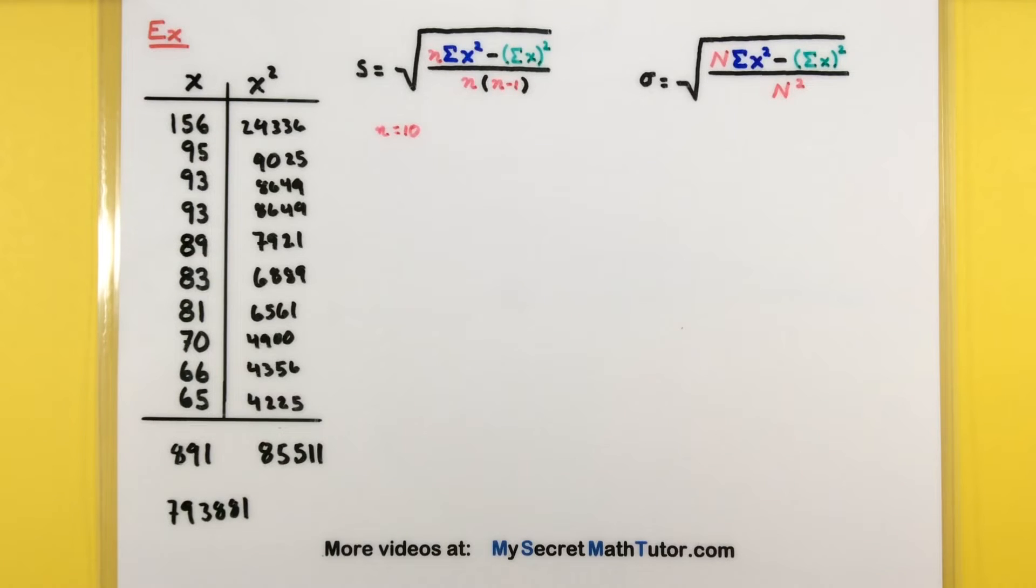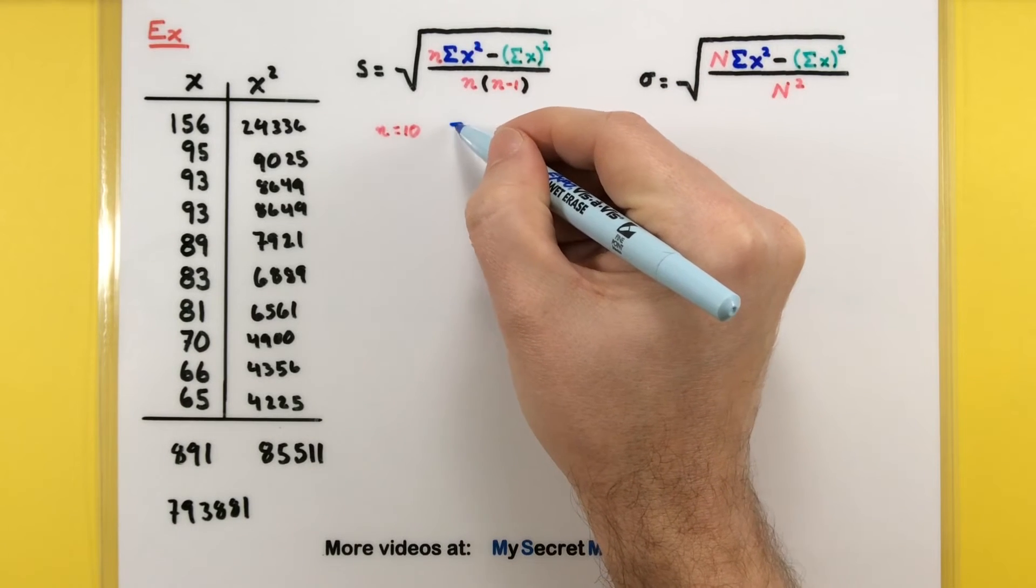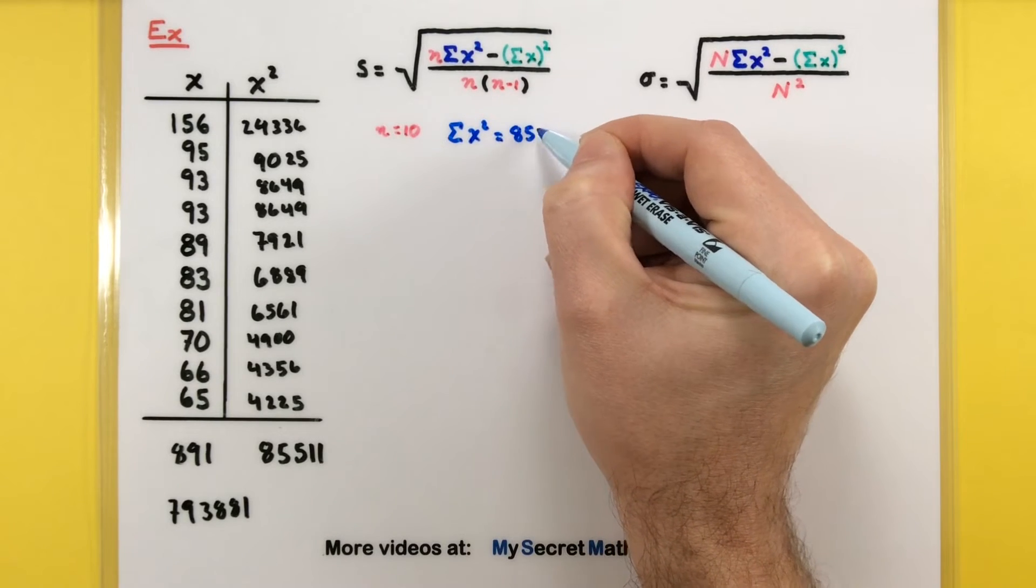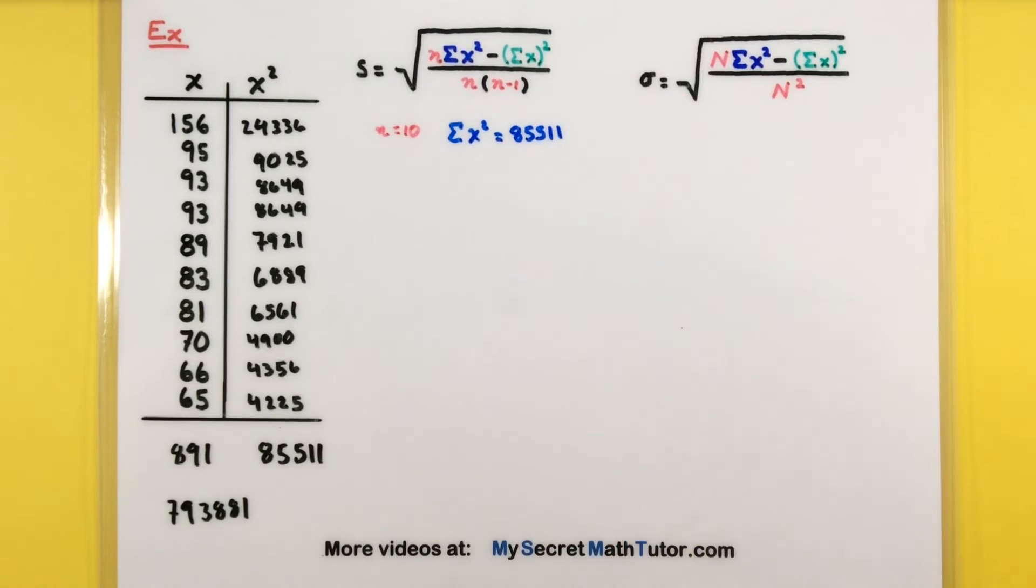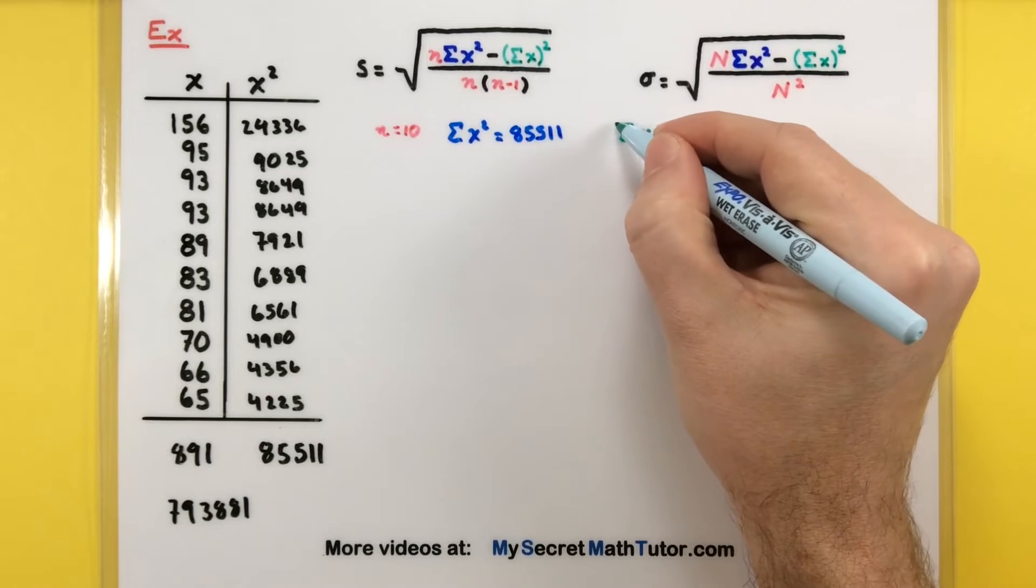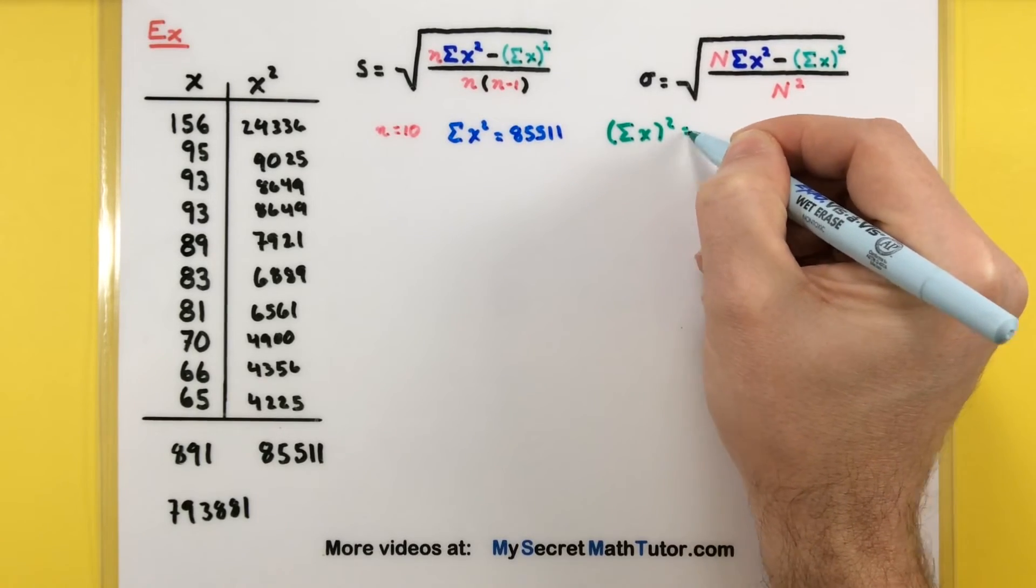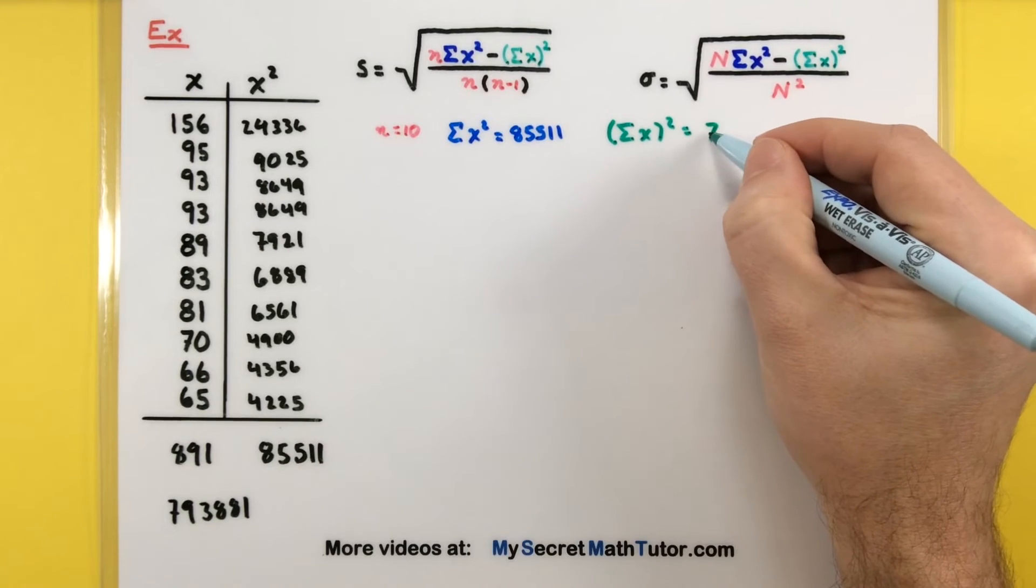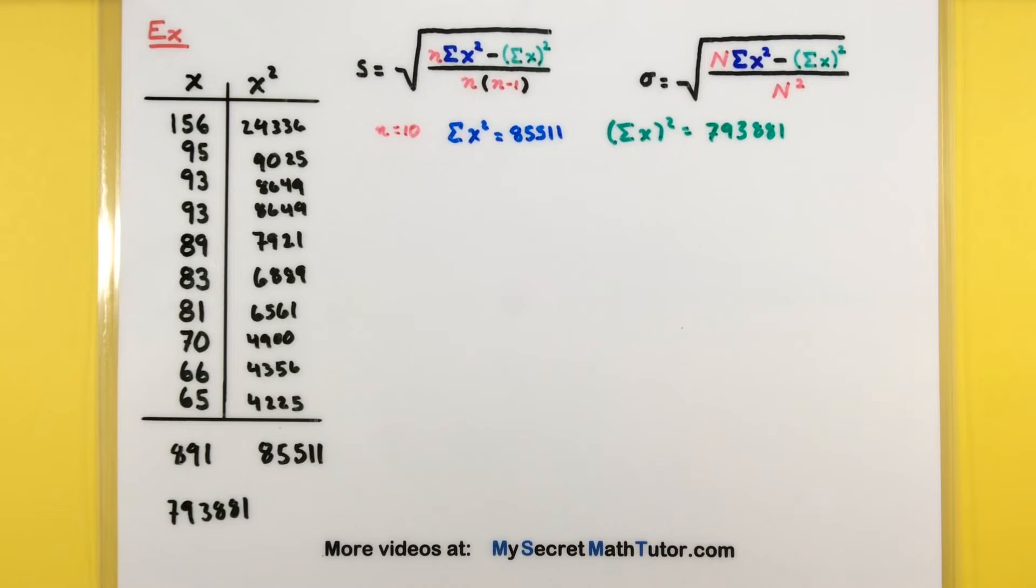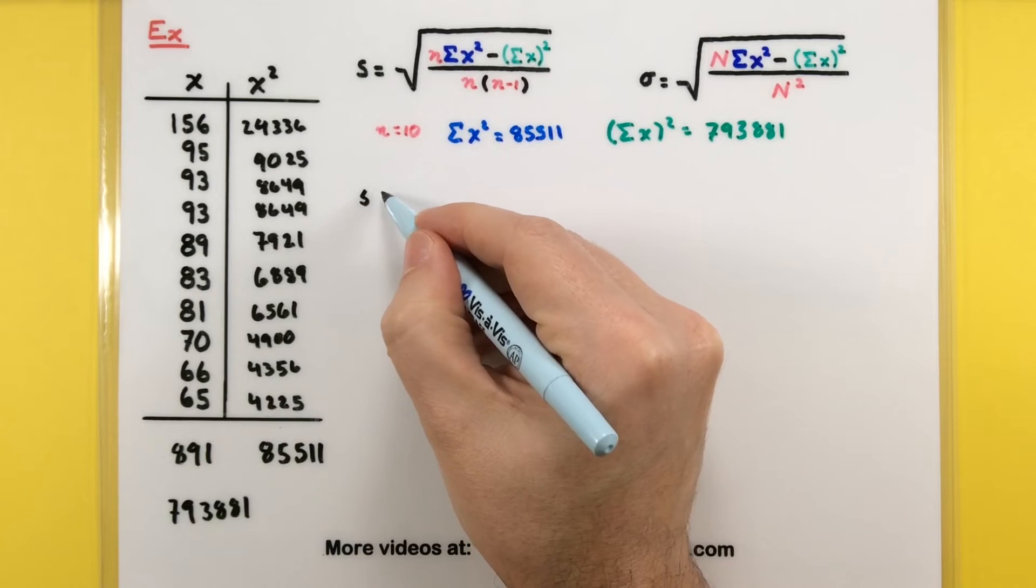Alright, just to be clear what values we have found here, let's go ahead and write that with the other stuff up here. So, I have the sum of the x squareds. That was 85,511. And then we added up all of the values as they were and then squared that sum. This was 793,881. Okay. So, now that we have all of our various pieces, now we literally just put it into the formula.